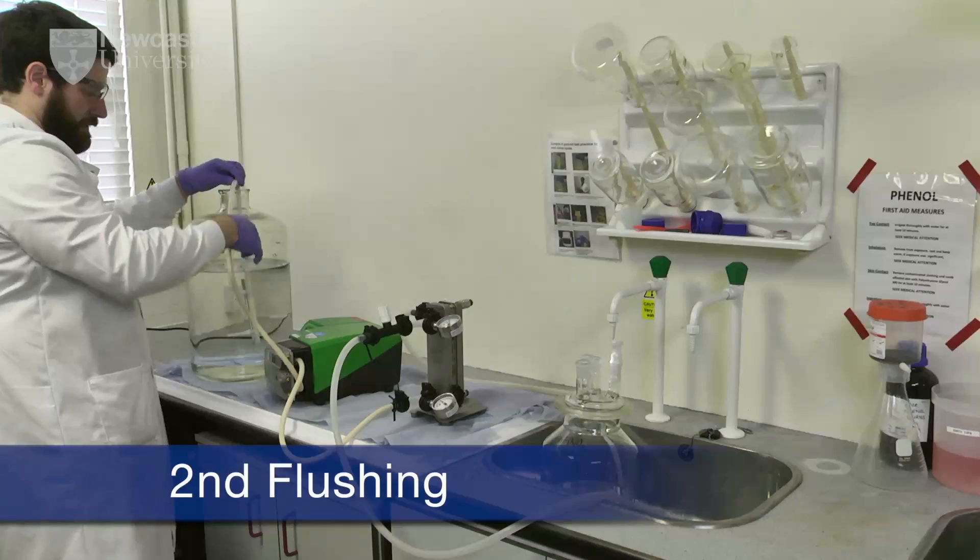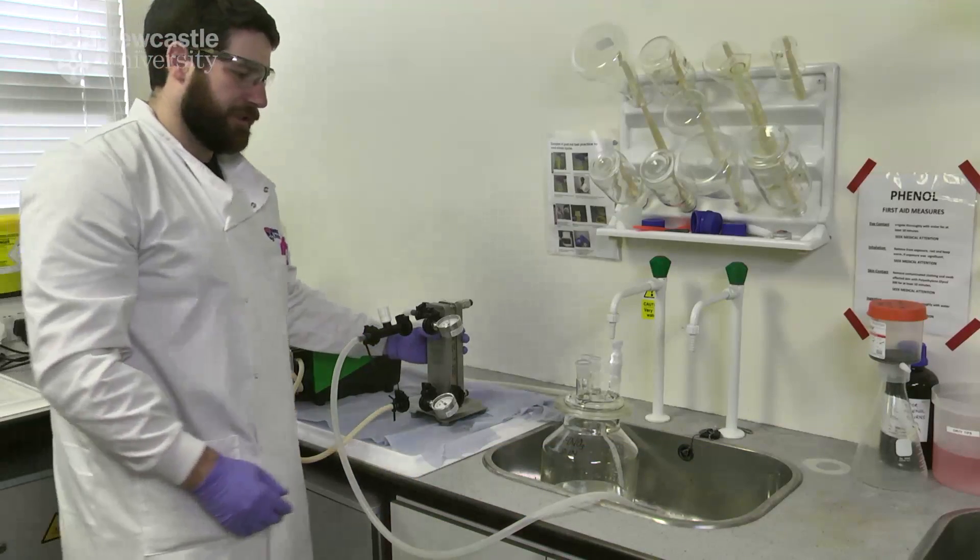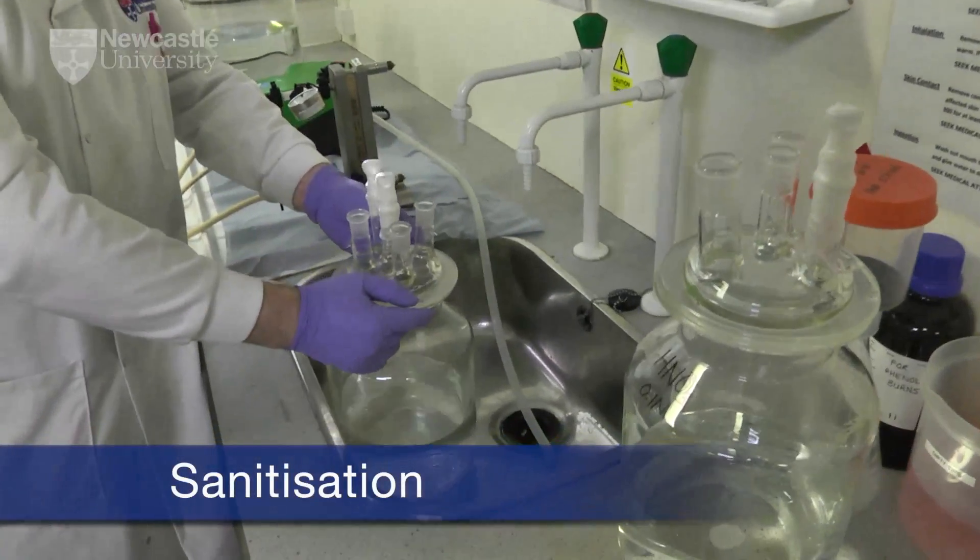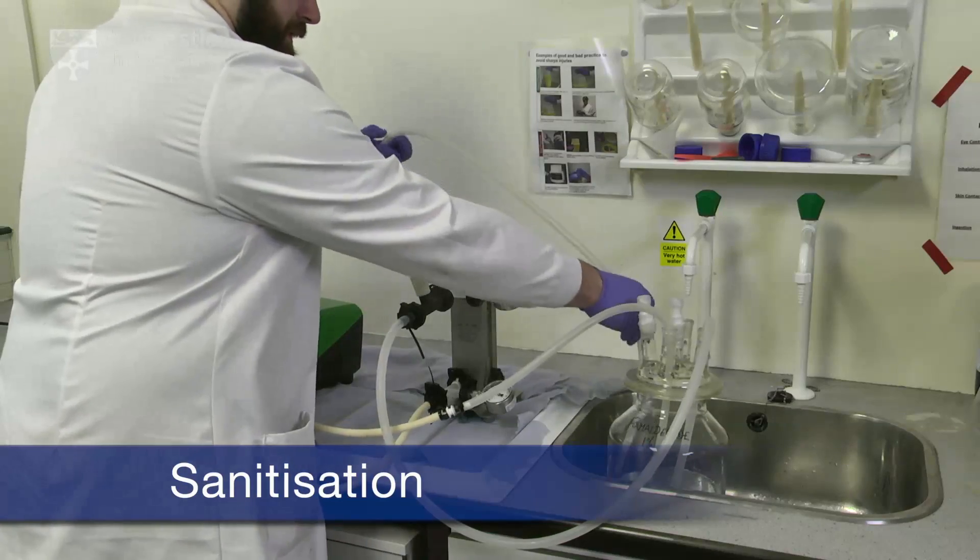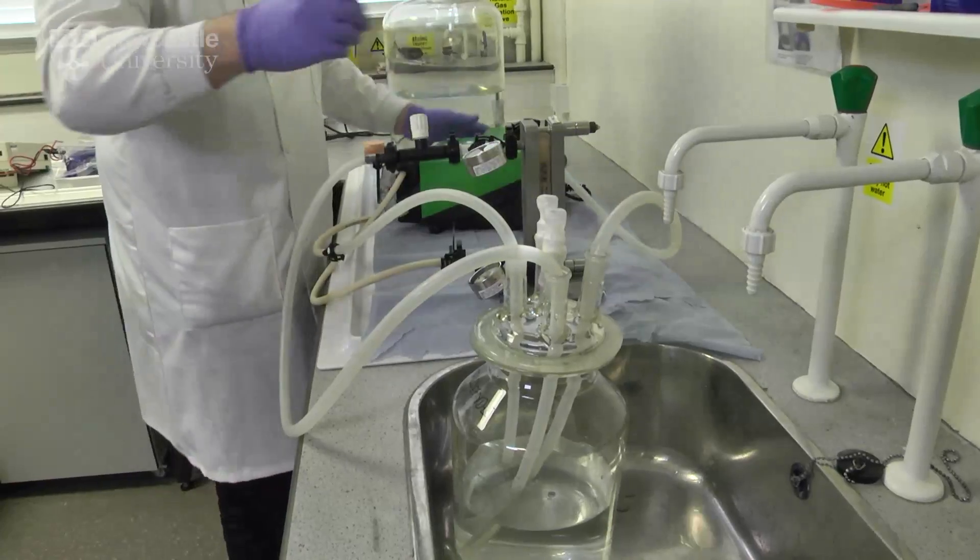The flushing procedure is repeated as previously described. A sanitising solution is then recirculated for approximately 30 minutes. The feed, retentate and permeate lines are all fed into the storage tank.